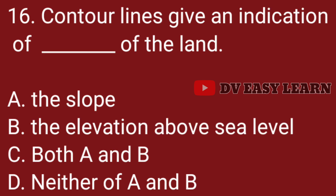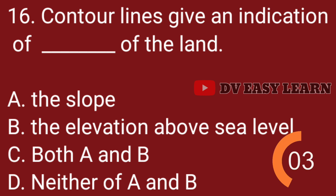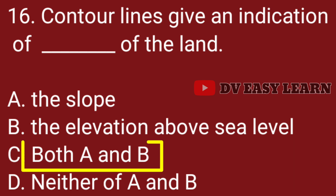Question no. 16. Contour lines give an indication of the land's: Correct answer: both A and B — the slope and the elevation above sea level.